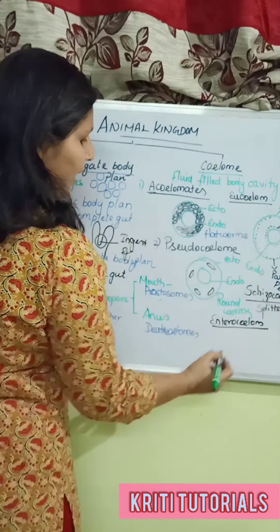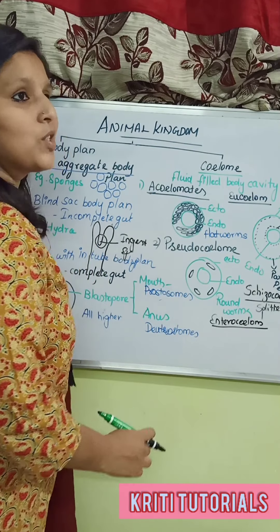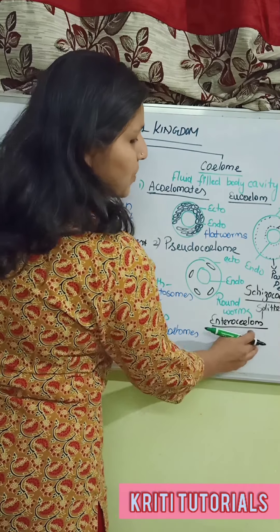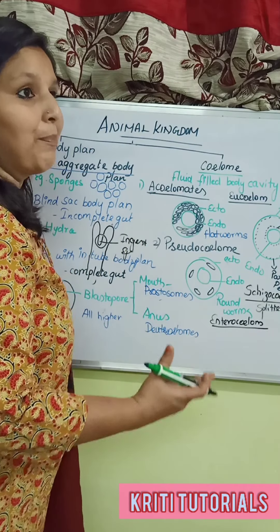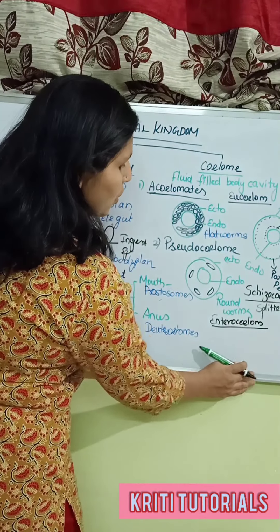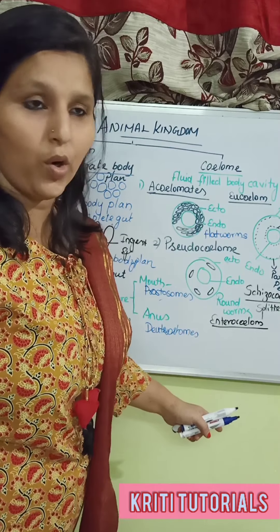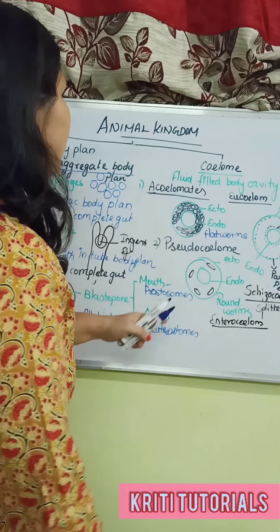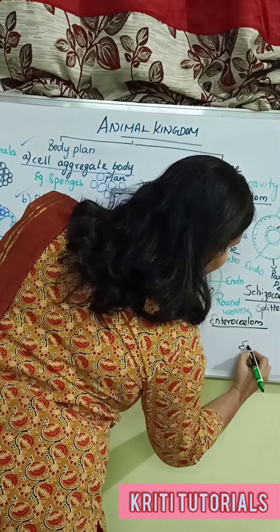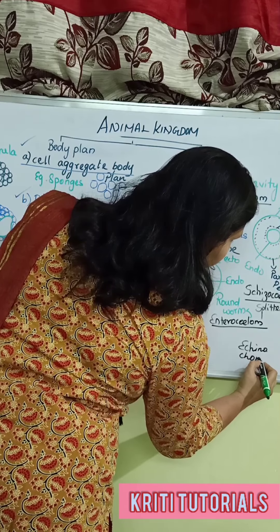In the case of enterocoelome, it becomes part of the archenteron — the initial stage of the digestive system. This occurs in all echinodermata as well as chordate species.